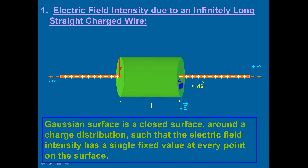We consider another area segment B lying on the second cross-section of the cylindrical surface. Its direction is also perpendicular to the surface directed outwards, and the direction of electric field is away from the positive charge. We also consider a surface C lying on the curved surface area of the cylinder. Its direction is also perpendicular outwards, and the direction of electric field is away from positive charge.